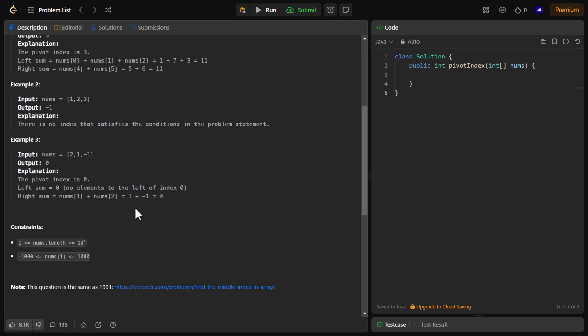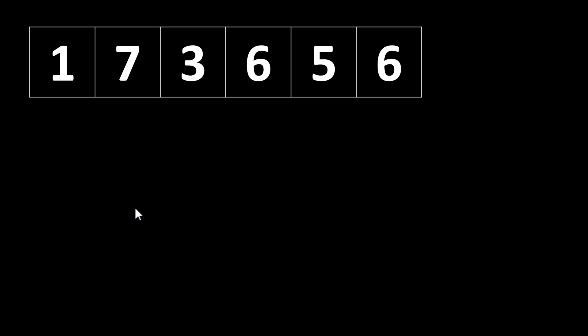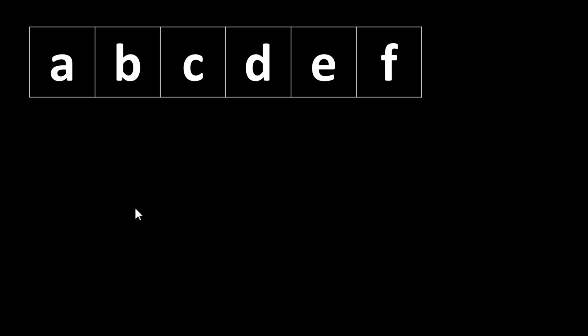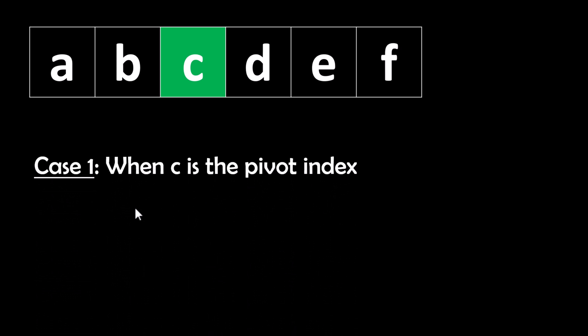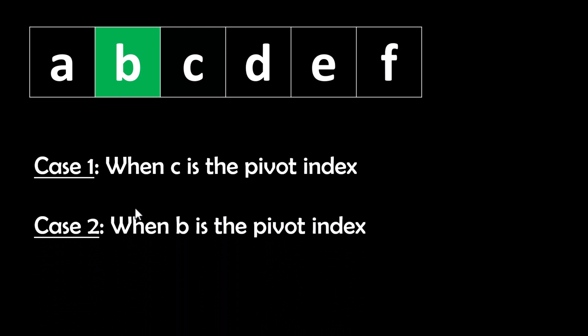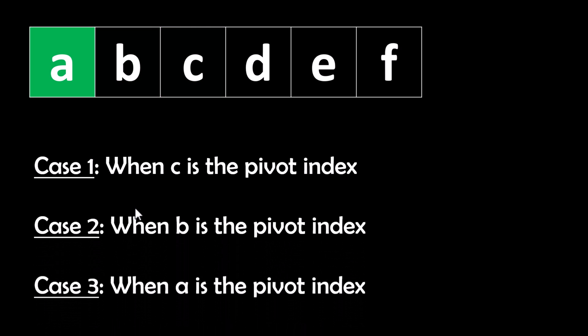Now let's see how we can solve this problem. Rather than going with the given example, let's generalize it and try to come up with a solution. We'll take the values to be a, b, c, d, e, f rather than numbers. With this array we will discuss three cases: the first where c is the pivot index, the second where b is the pivot index, and the last extreme case where a is the pivot index.